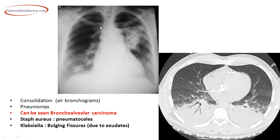On this X-ray there is a large opacity in the left upper zone with visible bronchial markings — this is consolidation with air bronchograms, clearly depicted on CT. Air bronchograms with consolidation can also be seen in bronchoalveolar carcinoma. Consolidation or pneumonia caused by Staph aureus is accompanied by pneumatoceles.